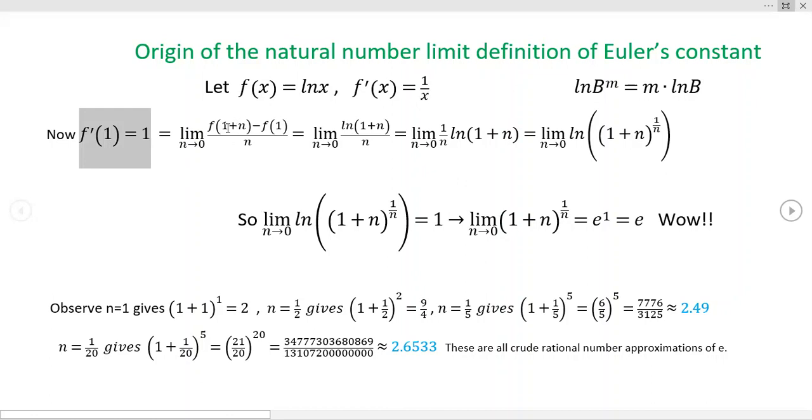But this is also equal to what we call the limit definition. Now, y'all, I'm using the letter n. H gets used a lot. I'm using the letter n to let you know that even though it's a continuous variable, we normally think about this in terms of a natural number one, two, three, four, et cetera.